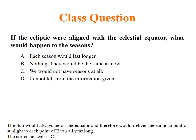Now, let us have a question. If the ecliptic were aligned with celestial equator, what would happen to seasons? A: Each season would last longer. B: Nothing, they would be the same as now. C: We would not have seasons at all. D: Cannot tell from the information given.